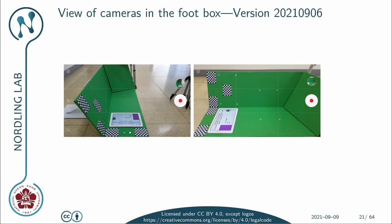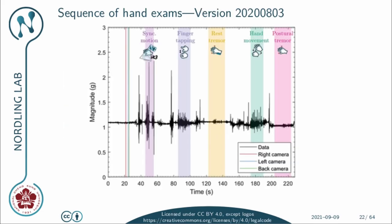Here we have the views from the two cameras for the foot box. We are recording no less than seven different motor tests that are part of the UPDRS today, done in two different recordings — one for the hand tests and one for the foot tests.